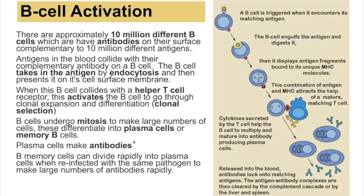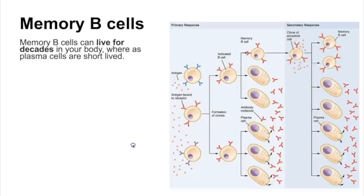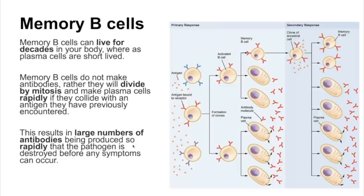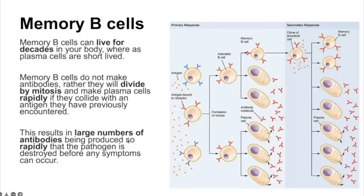Plasma cells produce antibodies complementary in shape to that particular antigen. Memory B cells can divide rapidly into plasma cells if the same pathogen is encountered again, enabling large numbers of the correct antibody to be made so quickly that the pathogen is destroyed before causing symptoms. Memory B cells can live for decades in the body, whereas plasma cells are short-lived. Memory B cells cannot make antibodies themselves but can divide by mitosis and differentiate into plasma cells, producing rapid large-scale antibody production.